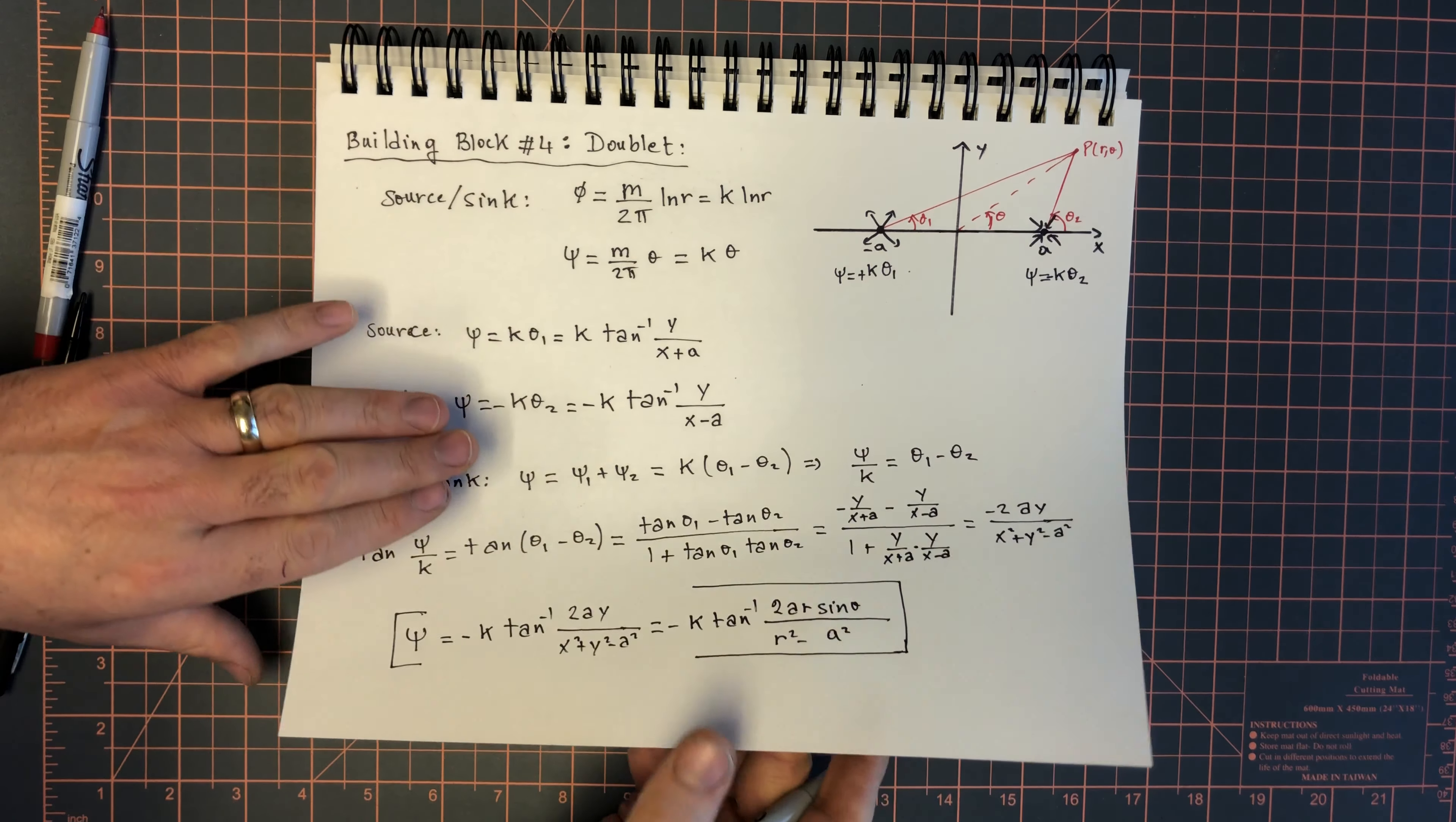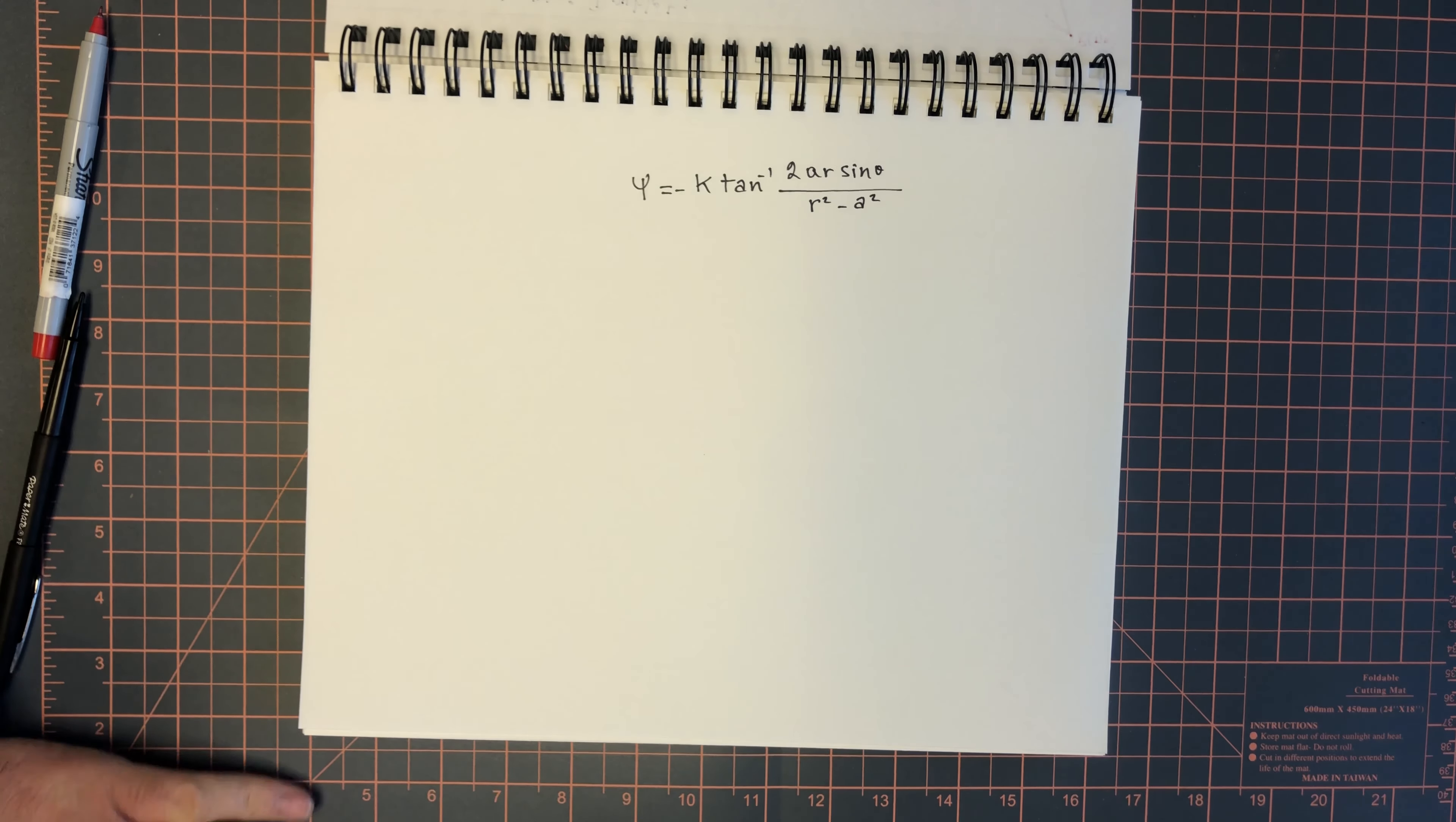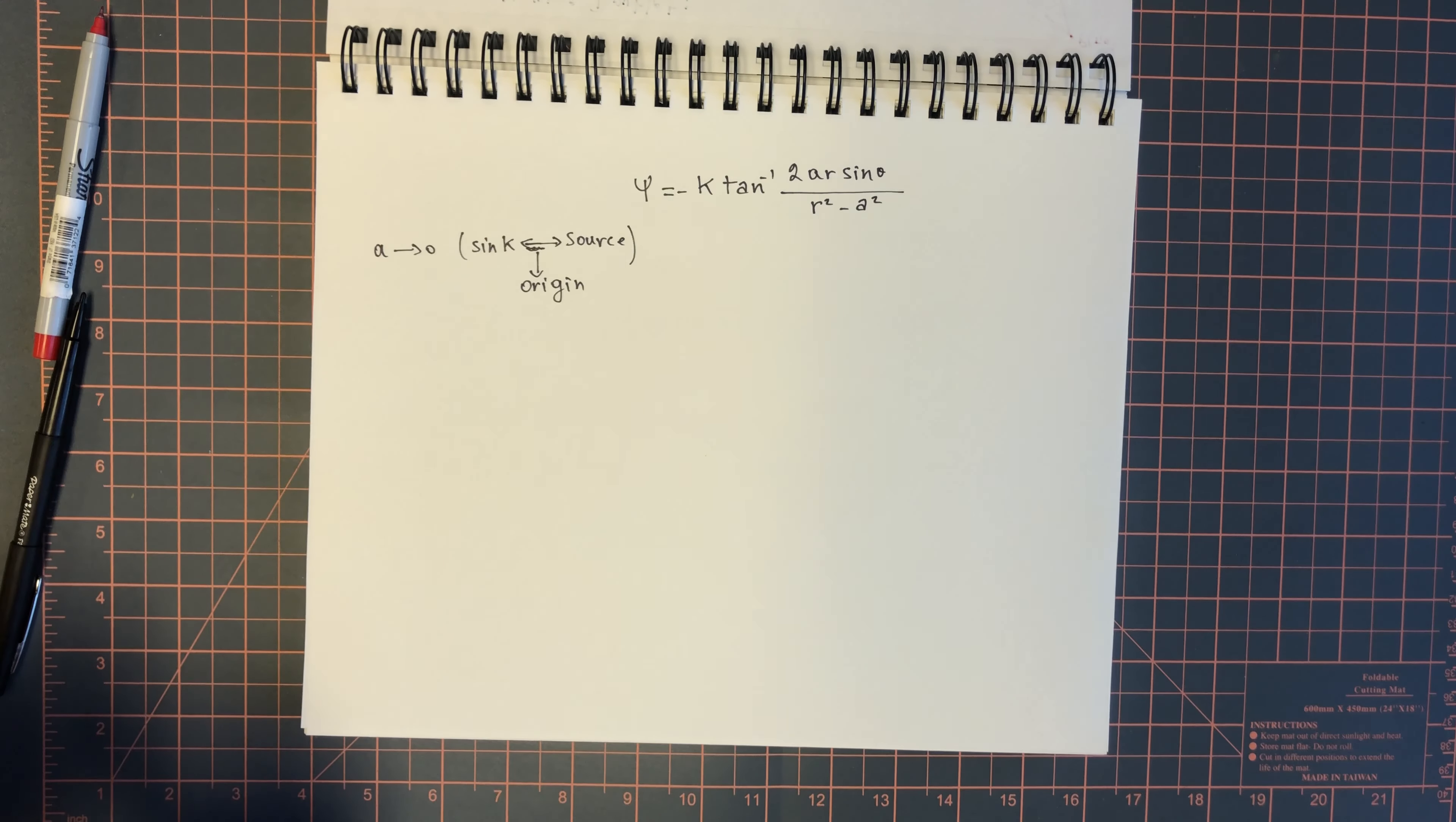We're going to ask ourselves the following question. Psi is minus k inverse tan of 2 a r sine theta over r squared minus a squared. What happens as a becomes infinitely small, as a approaches 0? In other words, sink approaches the source, and they both approach the origin. We're bringing the sink and the source to the same point.